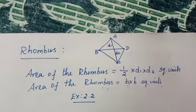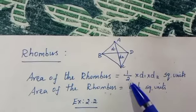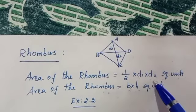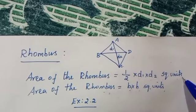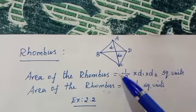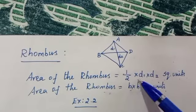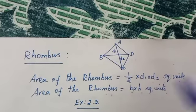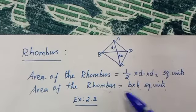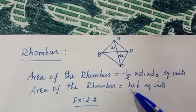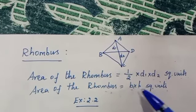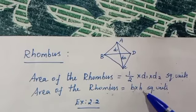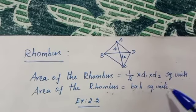Rhombus formula. Area of the rhombus is equal to 1/2 into d1 into d2 square units. Another formula: area of the rhombus equals base into height square units. B means base, H means height.